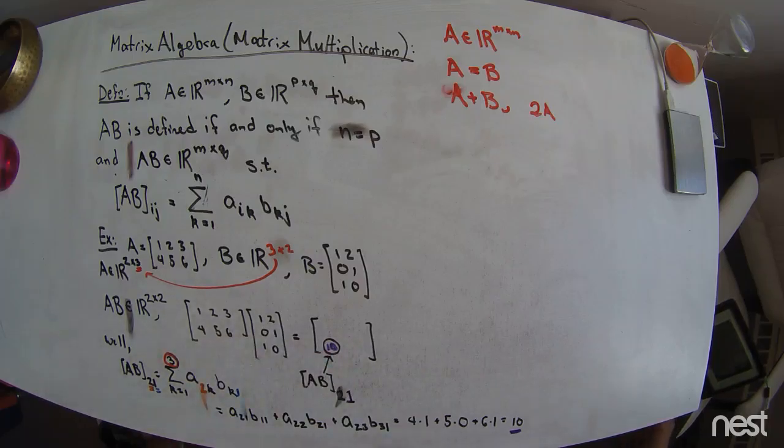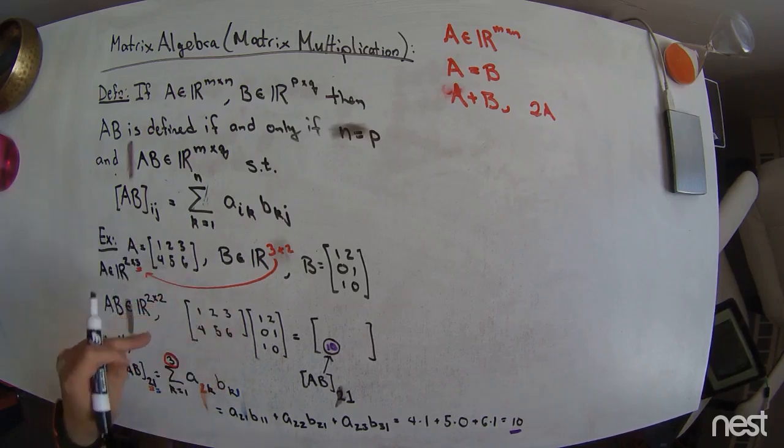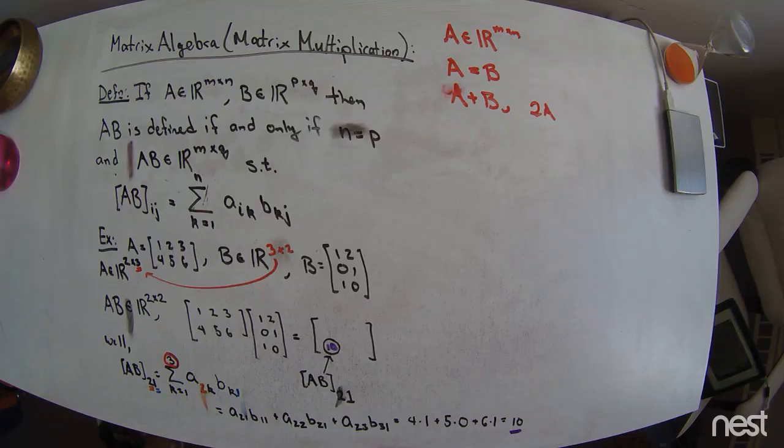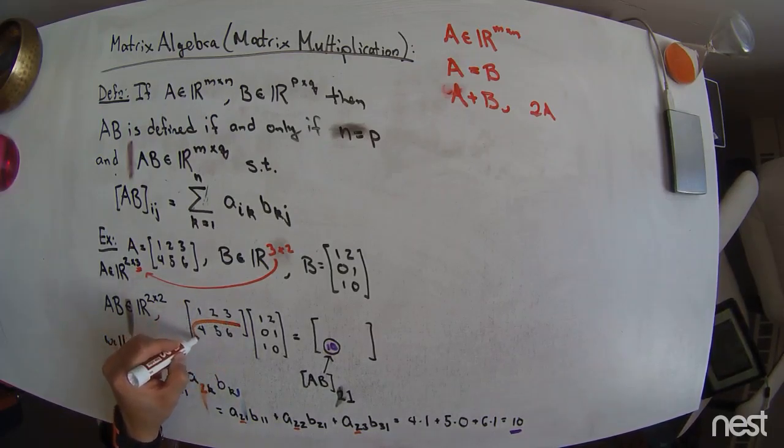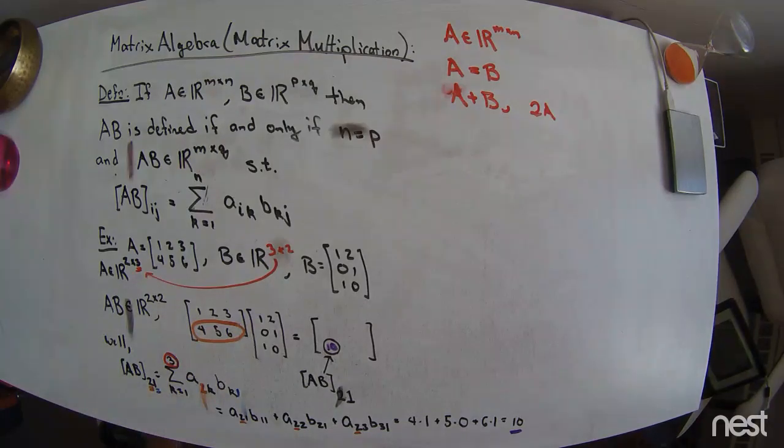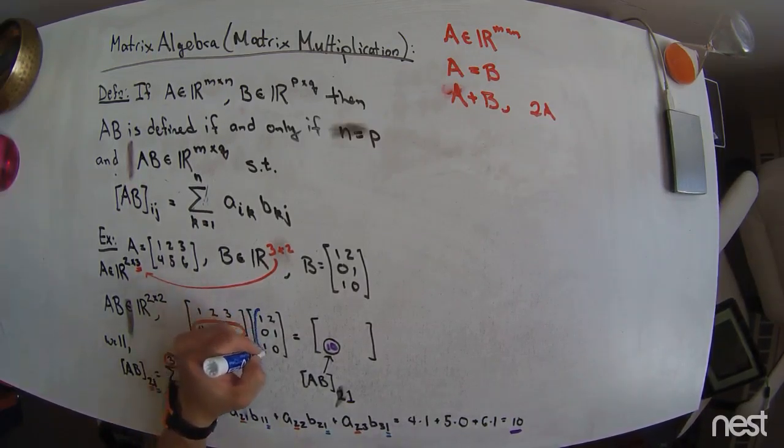What we want to notice at this point is that I'm taking certain elements from the A matrix and certain elements from the B matrix, and I'm getting a scalar out of it. Notice that I'm always grabbing here from the 2nd row of the A matrix. So that would be all these guys. And then I'm always grabbing from the 1st column of the B matrix, which would be this.